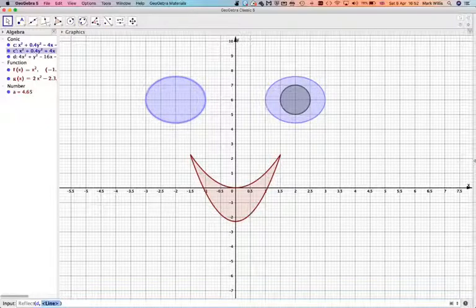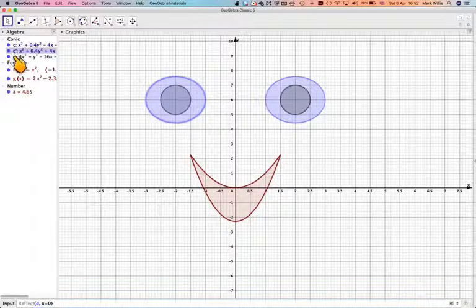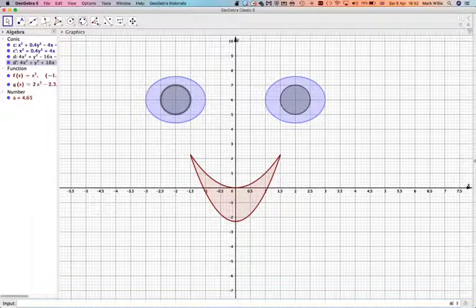Okay, and then if that line is going to be x is equal to 0. These letters might come up different, but you can see the one C, C dash. C dash is the reflection. Okay, and you've got D, and D dash is the reflection.